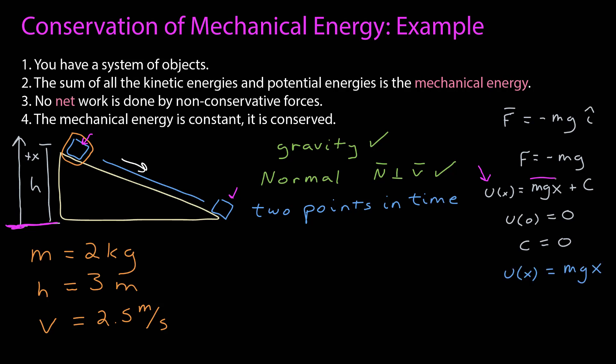I now have a functional form for my potential energy, which is mg times the coordinate x. Until you become very familiar with these types of problems, I strongly encourage you to go through this reasoning so you understand where the functional forms of the potential energies come from.